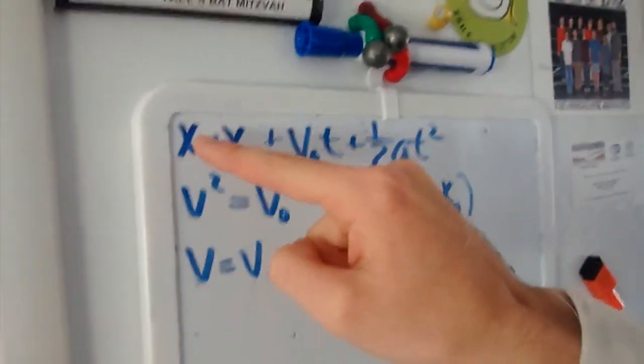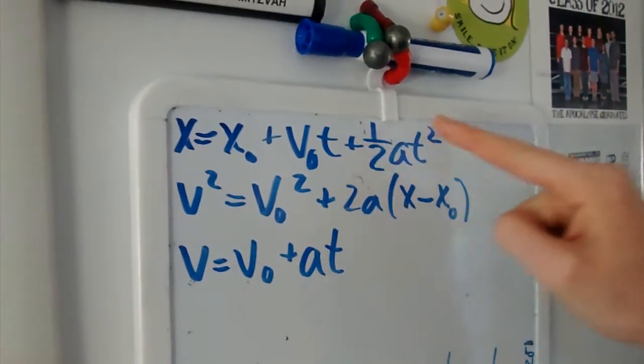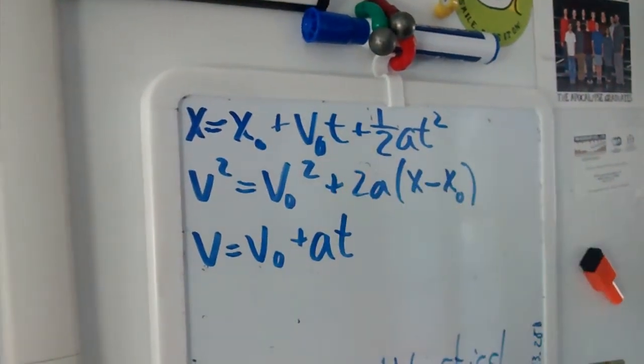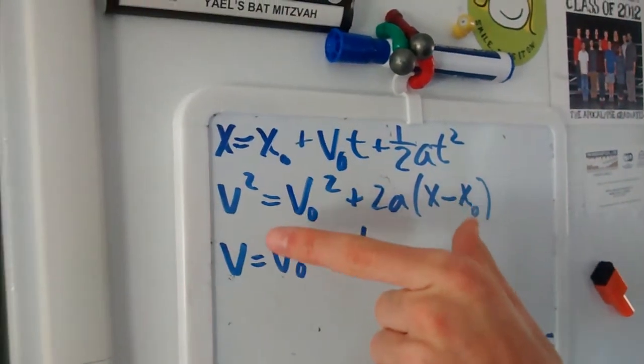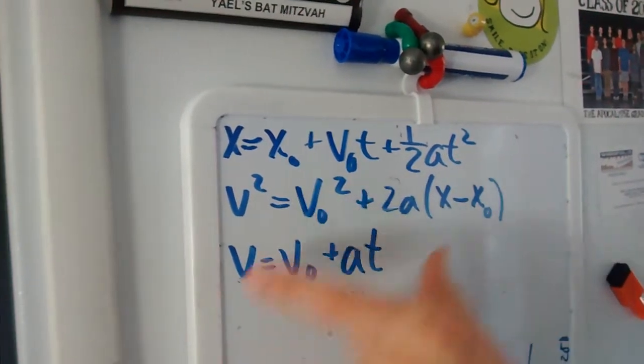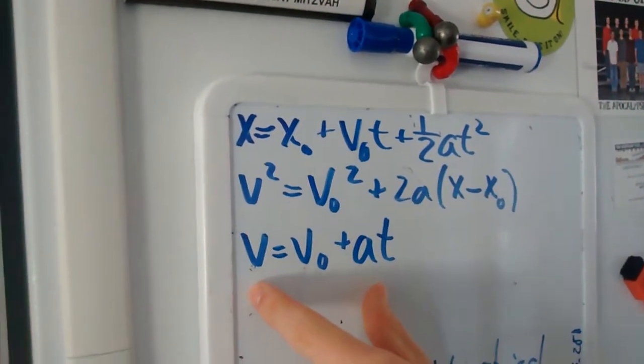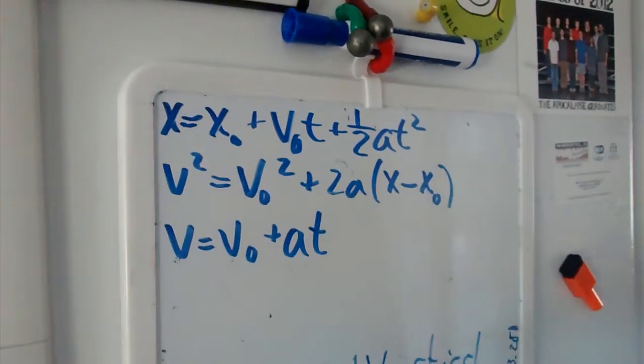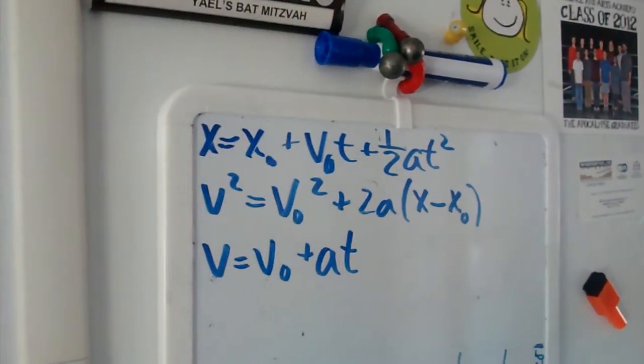So for this one, we had X we didn't know, X0, V0, T, and A we all knew. All of them we knew. So we could easily plug it in. For this, actually, we could have used the second one too. But we could not have used the third one because the third one does not even have an X. So that's the method you use to figure out which equation to use.